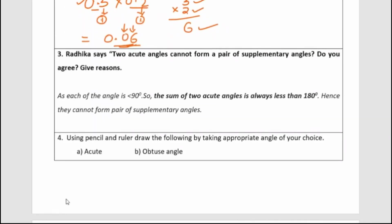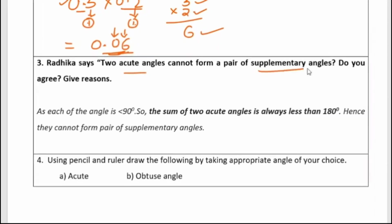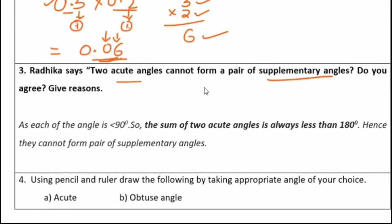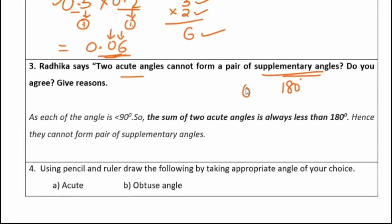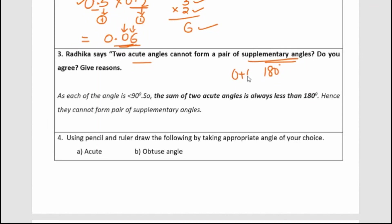Moving on to the third question. Radhika says two acute angles cannot form a pair of supplementary angles. Do you agree? Give a reason. Supplementary angles sum to 180 degrees — any two angles whose sum is 180 degrees are supplementary.